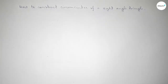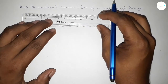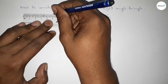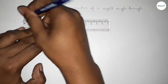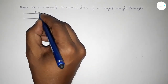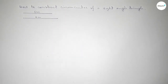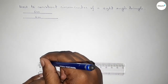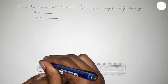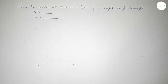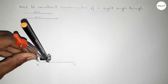First of all, we have to draw a right angle triangle using a compass. We take two lengths: five centimeter and six centimeter. Now we draw a line of length six centimeter, taking point B at one end and point C at the other.